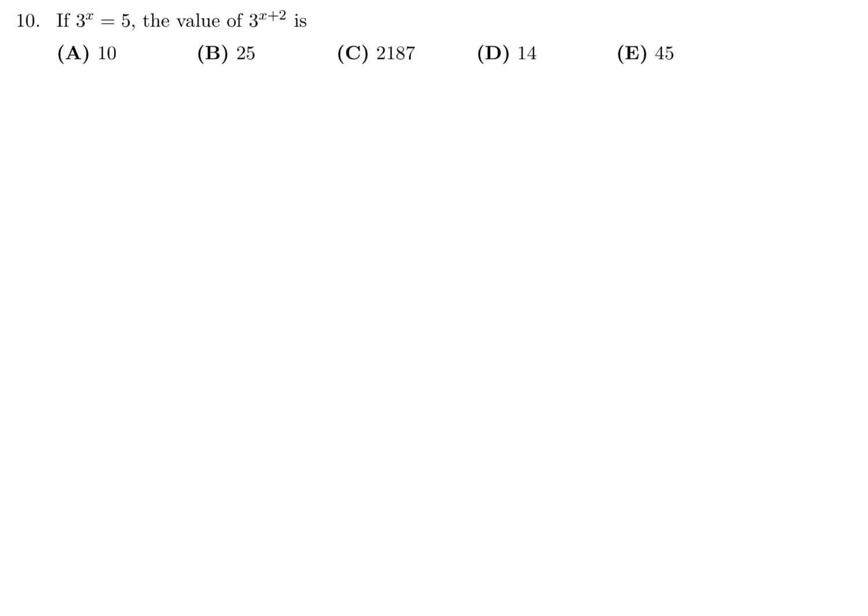If 3 to the power of x is equal to 5, then the value of 3 to the power of x plus 2 is: 3 to the power of x plus 2 is equivalent to 3 to the power of x times 3 to the power of 2. 3 to the power of x, they've given us in the question, is 5. 3 to the power of 2 is 9, so 5 times 9 is 45. Number 10, the answer is E.